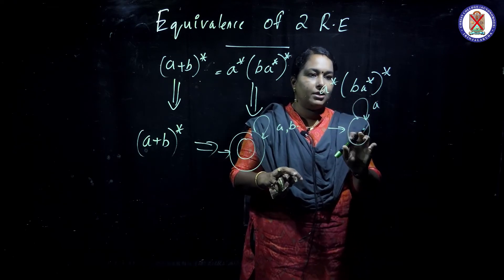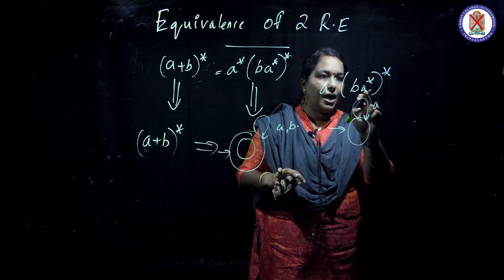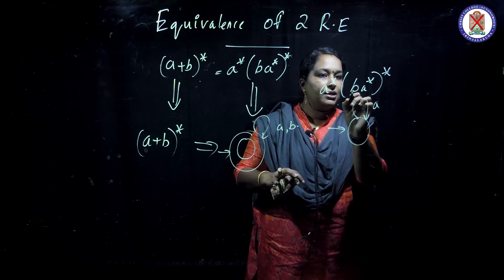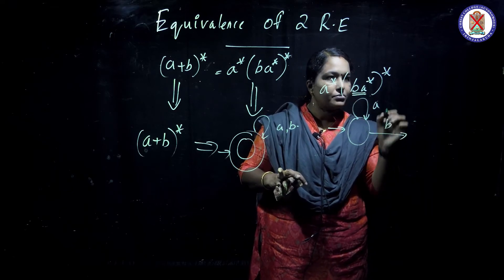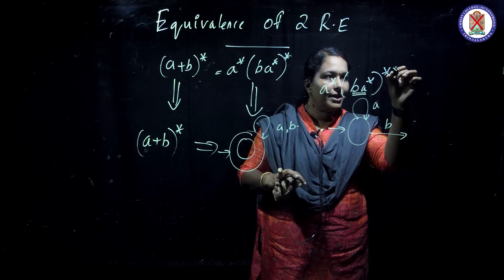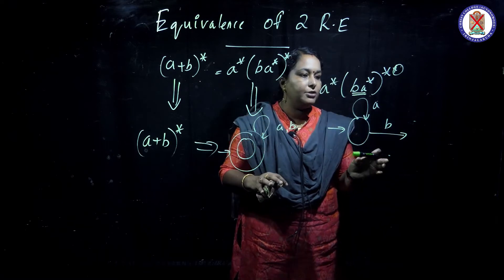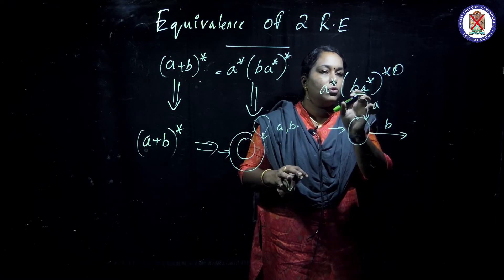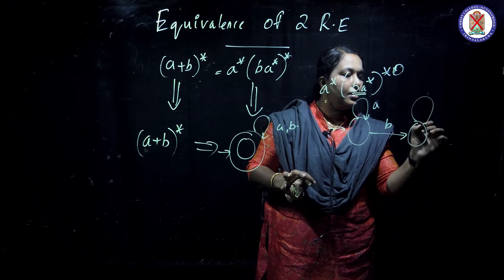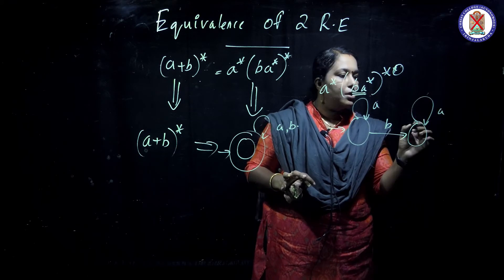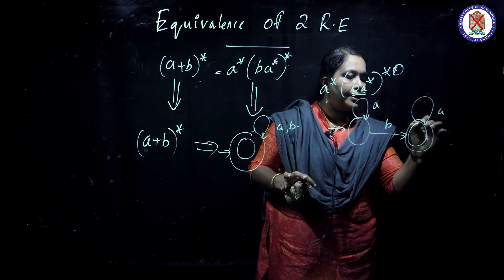Next, look at here — B A star. I am taking this only. B: I am not taken here, that is to be kept in mind by you. B A star means here I am looped. This is our final state.